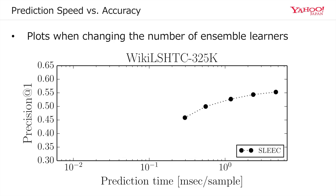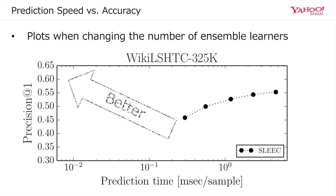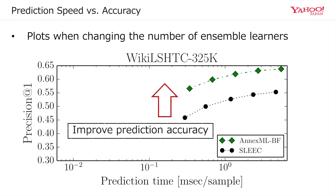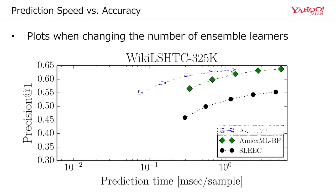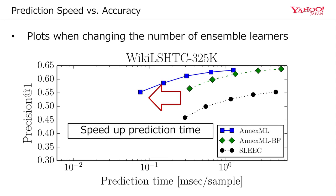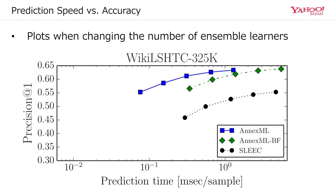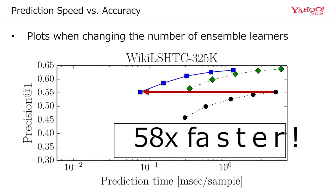This figure plots the prediction time and accuracy. The upper-left region indicates better results. The proposed ranking method improves prediction accuracy. In addition, the approximate nearest neighbor search technique speeds up prediction time. As a result, at the same level of accuracy, AnnexML was up to 58 times faster than the baseline.